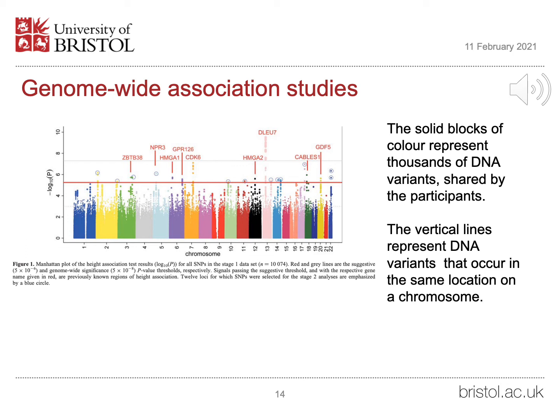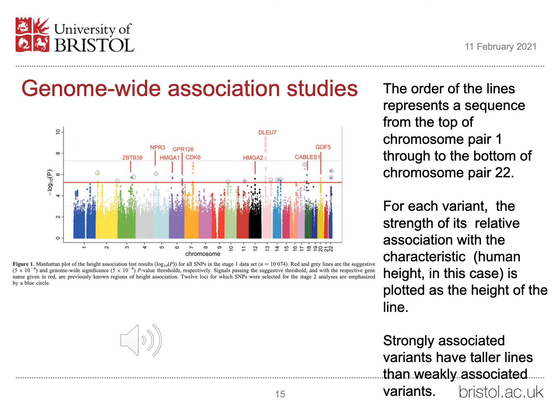The vertical lines represent DNA variants that occur in the same location on the same chromosome across the participants. The order of the lines on the chart represents a sequence from the top of chromosome pair 1 on the left, right through to the bottom of chromosome pair 22 on the right. For each variant, the strength of its relative association with the characteristic — human height in this case — is plotted as the height of the line.